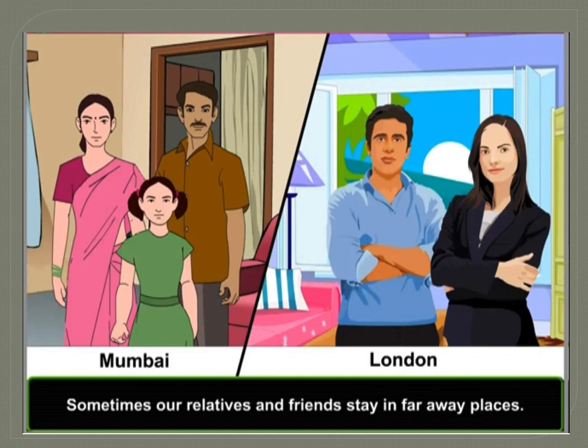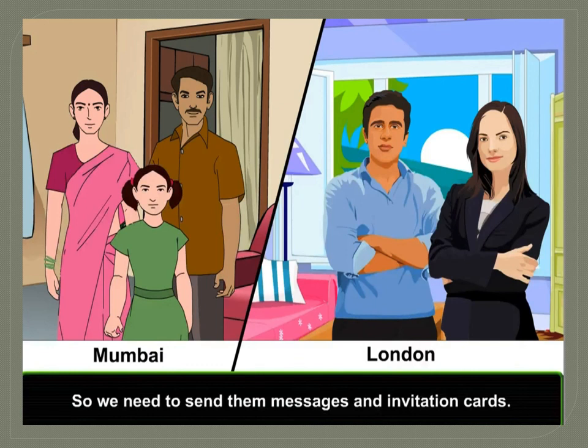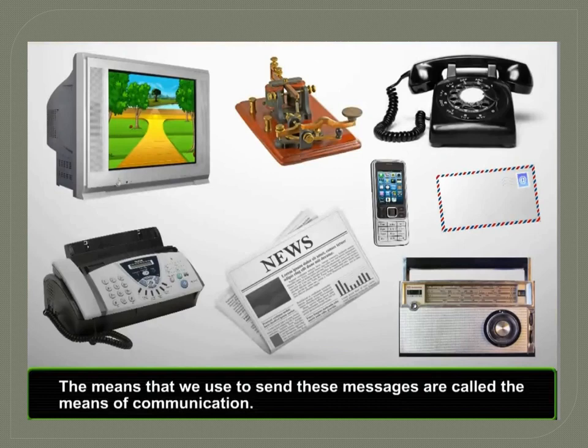Sometimes our relatives and friends stay in far away places. As you can see, some relatives are putting up in Mumbai and the others are putting up in London. So we need to send them messages and invitation cards. The means that we use to send these messages are called the means of communication.